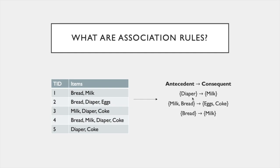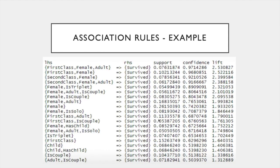Consider the association rule: diaper implies milk. Here, diaper is called the antecedent and milk is called the consequent. This means that if a customer purchases a diaper, it is highly likely they will also purchase milk. Similarly, if a customer purchases milk and bread, there is a high likelihood they will also purchase egg and coke.